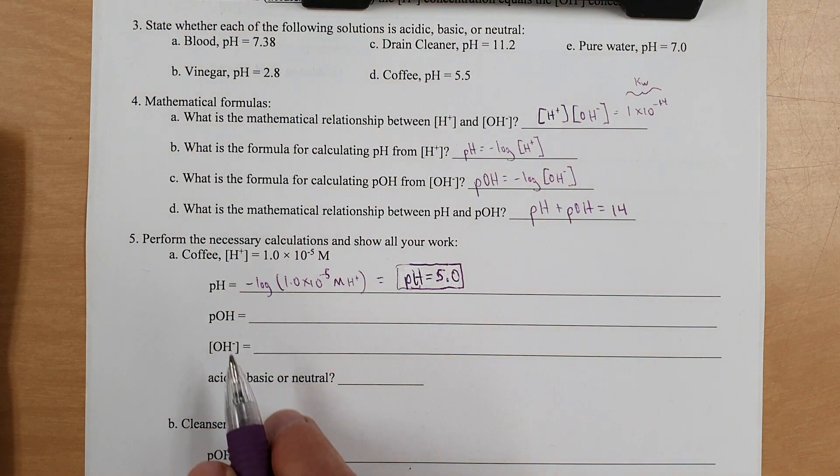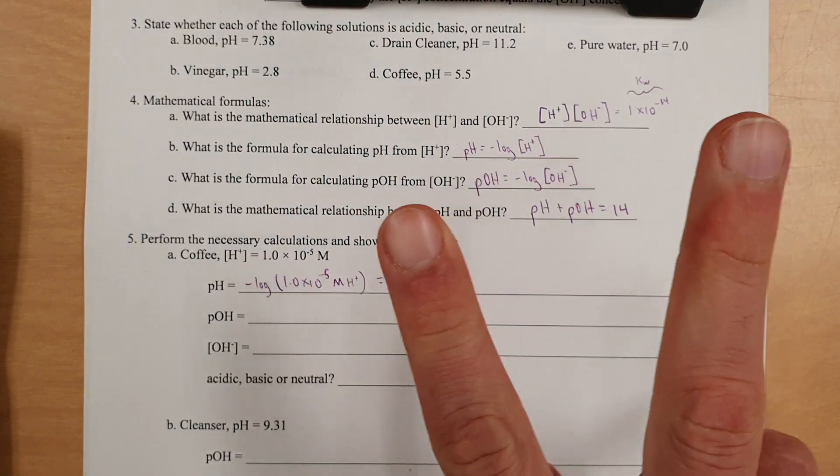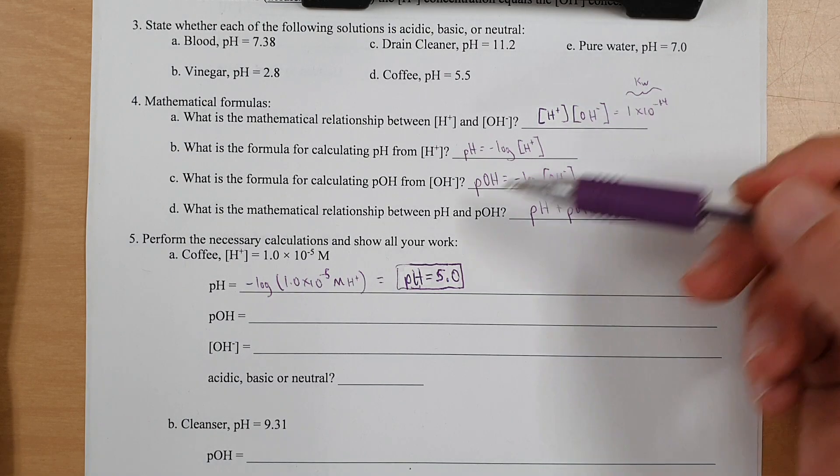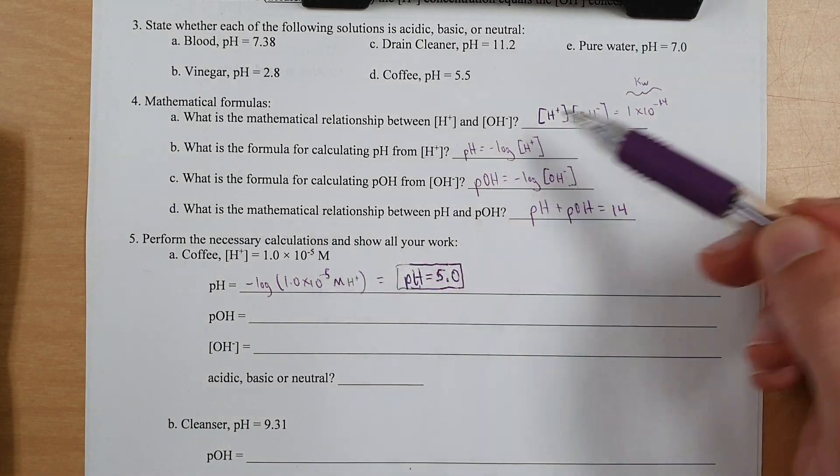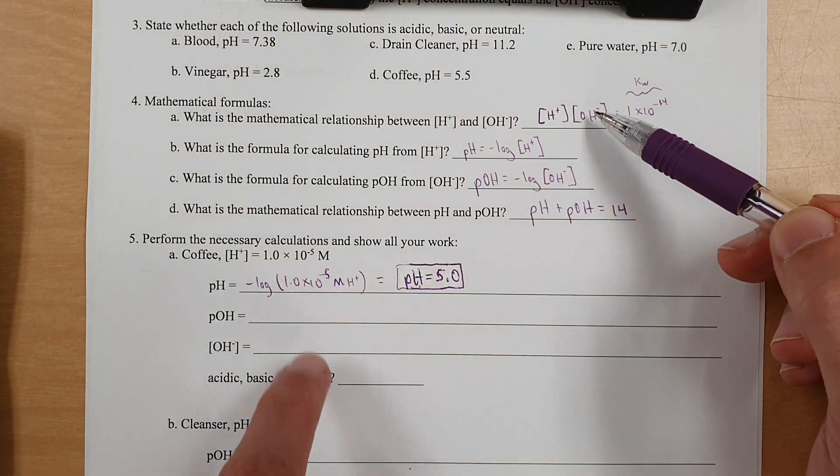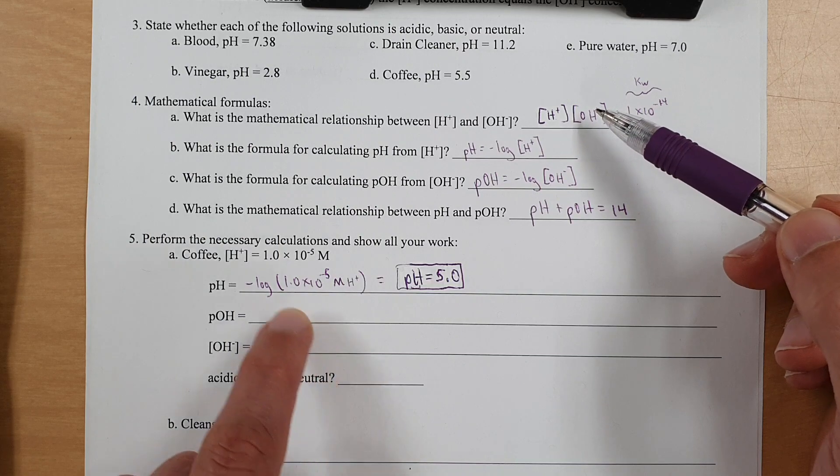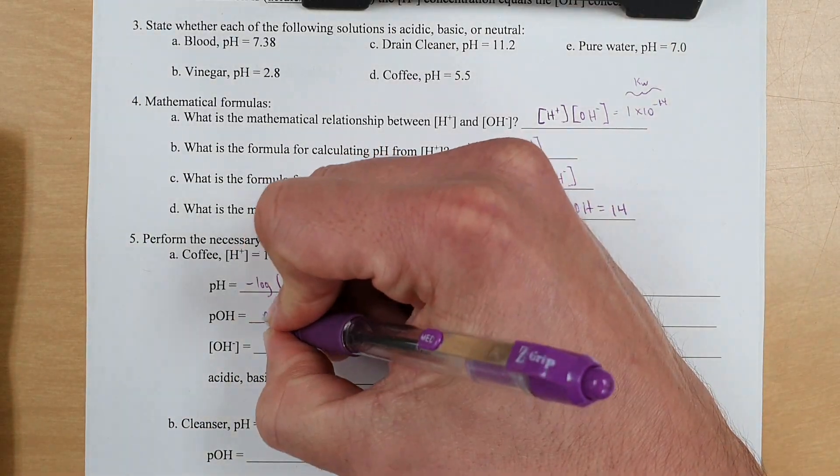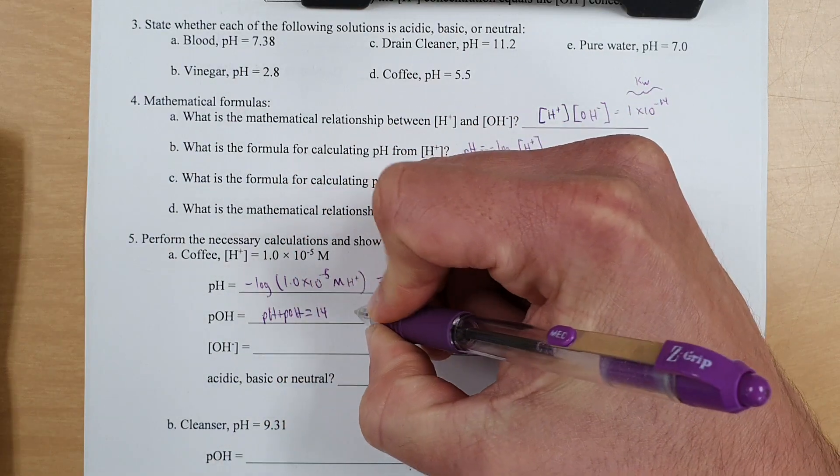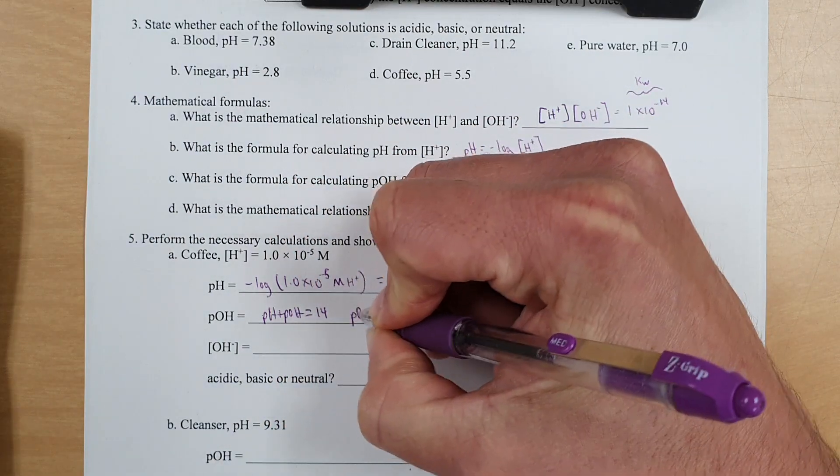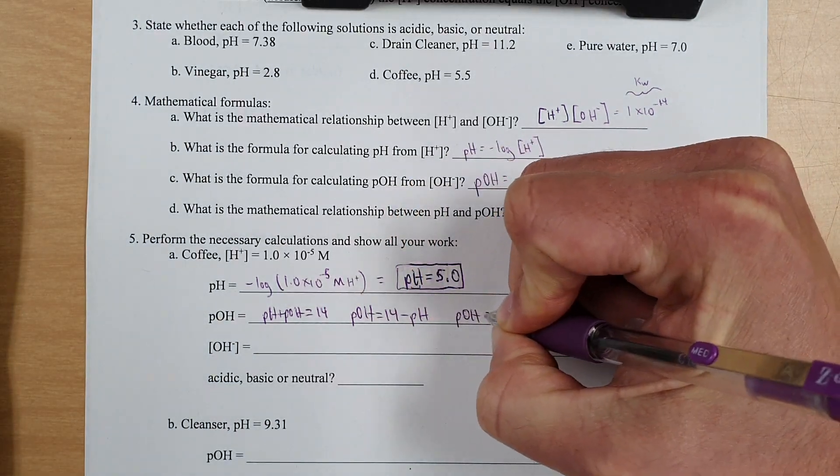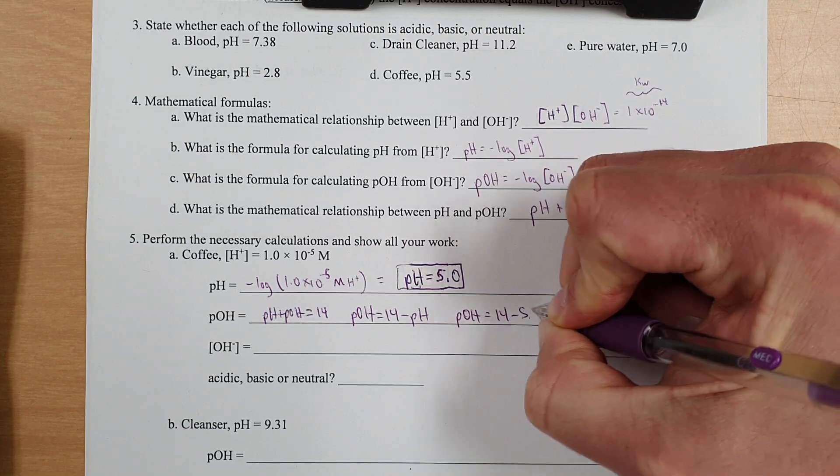Now, pOH and OH-, there's two ways you could go about this. You could use this mathematical relationship to take this, have this divided by this, which is this number right here, to get this, and that becomes your answer here. So you could do this first. Or you can just simply say pH plus pOH equals 14, which means pOH equals 14 minus pH, which means pOH equals 14 minus 5.0.